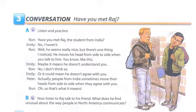Page 93, Exercise 3, Part B. Now listen to Raj talk to his friend. What does he find unusual about the way people in North America communicate?